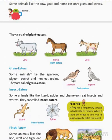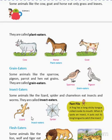Grain eaters — those animals who eat grains are called grain eaters' animals, like sparrow and pigeon. Insect eaters — those animals who eat insects and worms are called insect eaters, like lizard and spider.